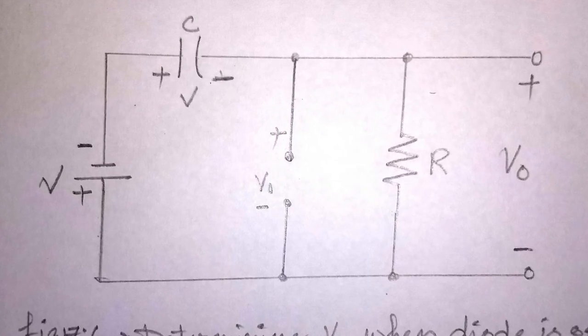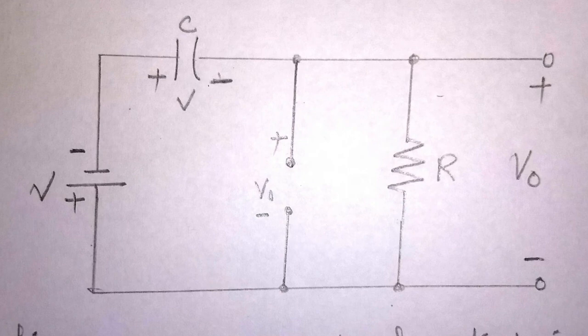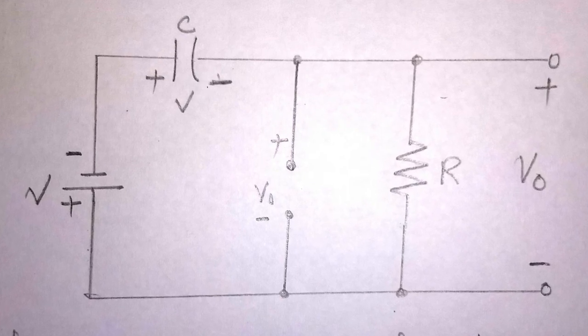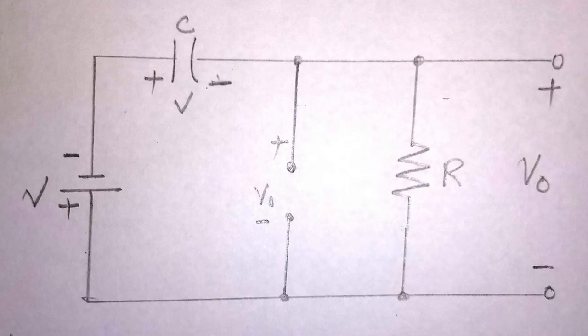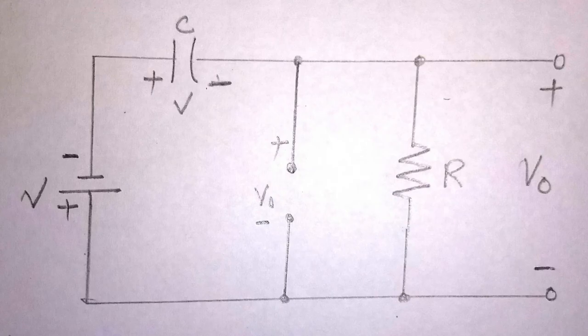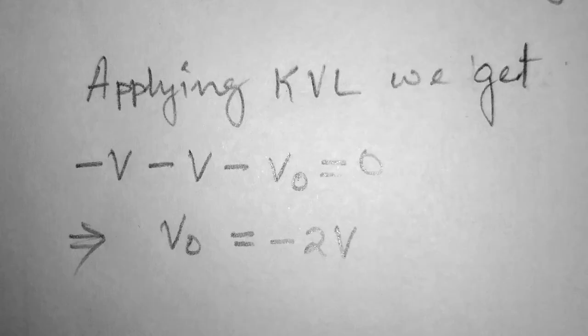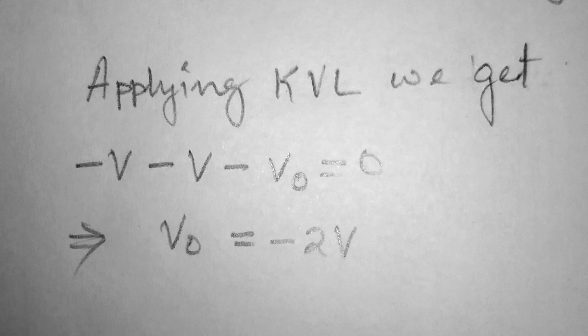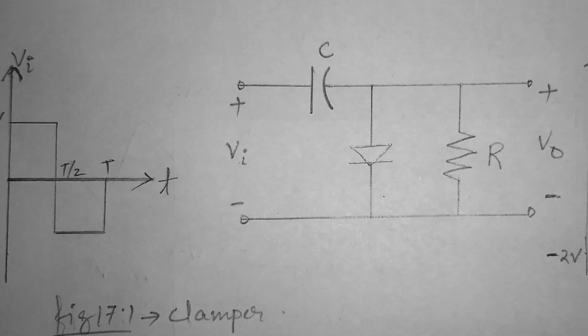Here, the time constant becomes sufficiently large to establish a discharge period of five times the time constant, which is much larger than the negative half period. Therefore applying KVL, we get output voltage equal to minus twice V. The output waveform becomes like this.